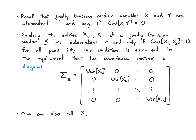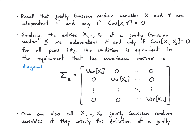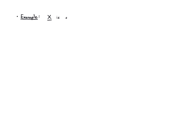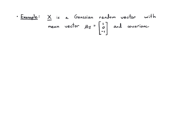Finally, n variables are jointly Gaussian if you can put them together into a vector that is a Gaussian vector. Now let's close out with an example. Let x be a Gaussian random vector specified by its mean vector and covariance matrix. The mean vector is μ_x = [1, 0, −1] and the covariance matrix is the 3×3 matrix with entries [4, 0, 0; 0, 1, −1; 0, −1, 2]. Note this matrix is symmetric.